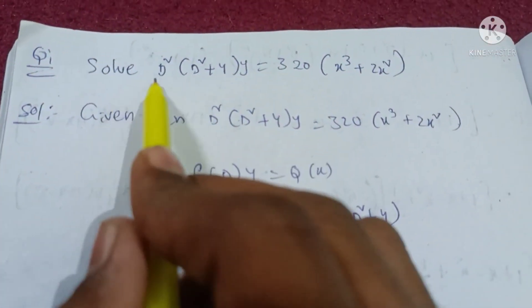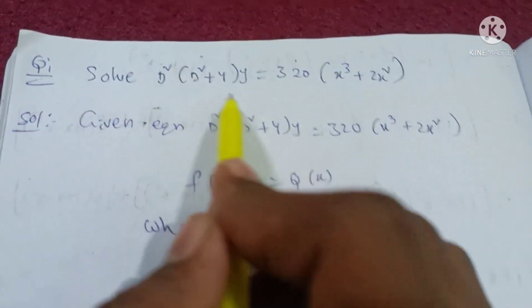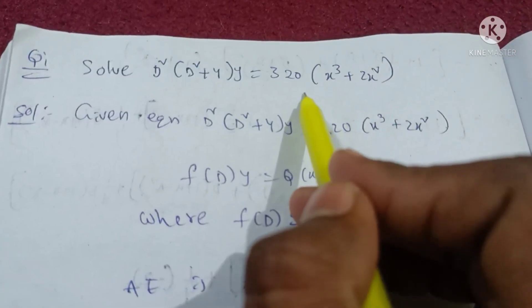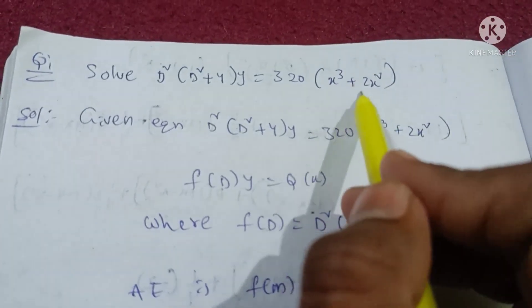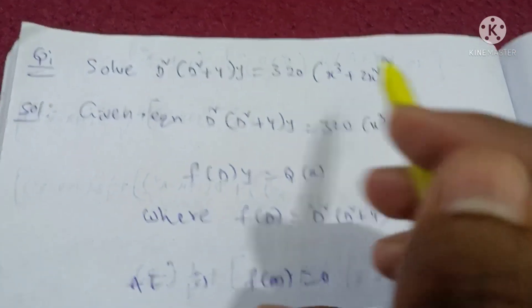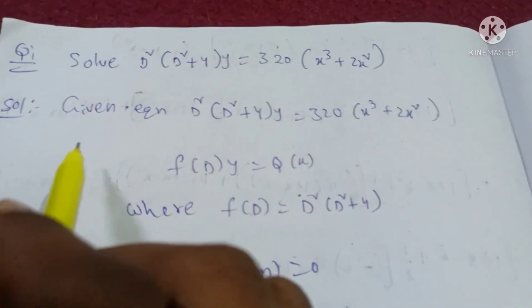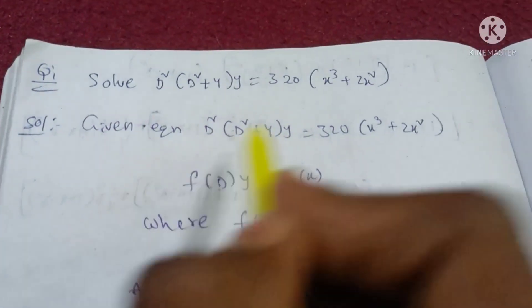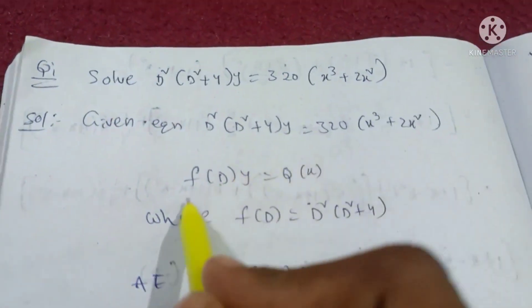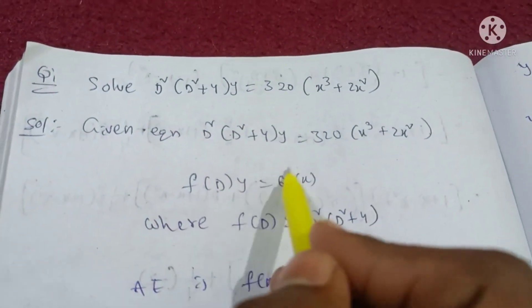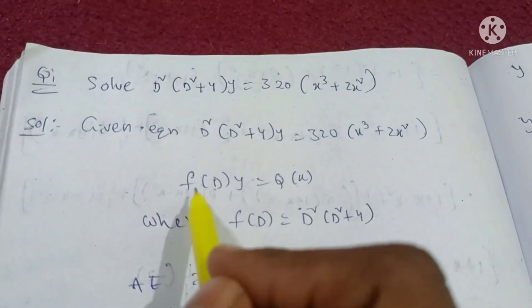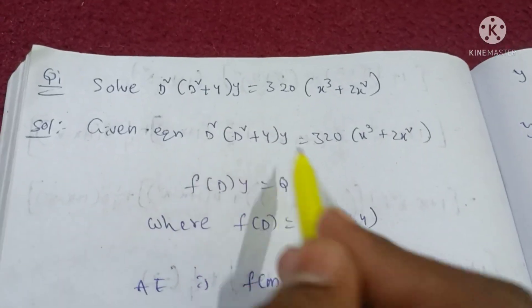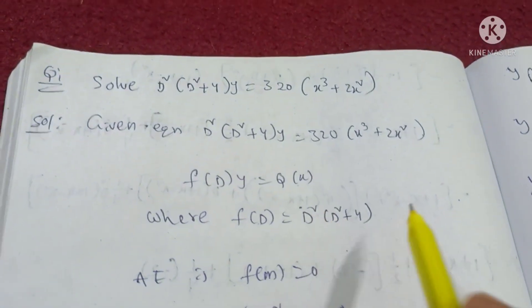Solve D squared into D squared plus 4 into y equals x cubed plus 2x squared. Given the equation f(D) of y equals Q(x), where f(D) equals D squared into D squared plus 4.